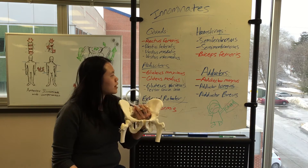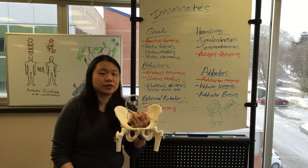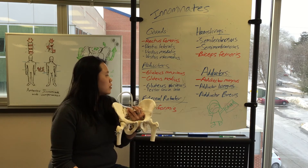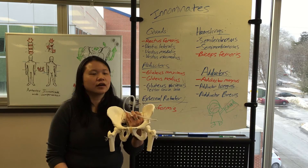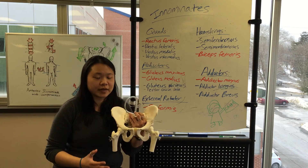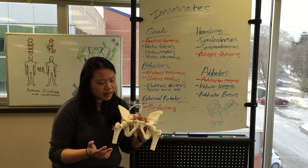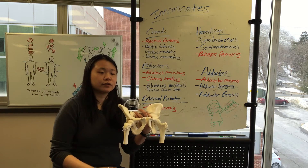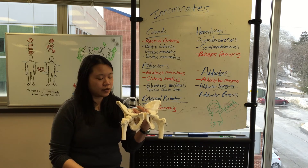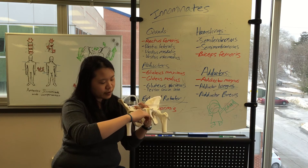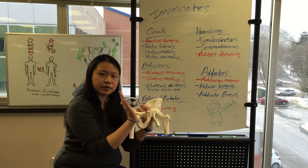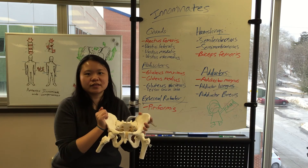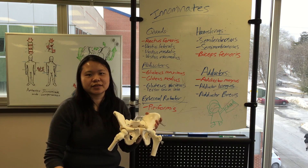Then you also have your adductors, which are going to be responsible for your in-flares. Three of your main adductors are adductor magnus, adductor longus, and adductor brevis. One of the key players there is your adductor magnus, and that attaches from the inferior surface of the pubic rami down to the medial aspect of your femur. When that contracts, that's going to pull your hips inwards, causing an in-flare. So those are some of your basic muscles, and we'll continue on to the treatment section.